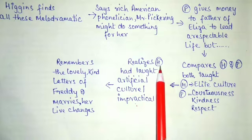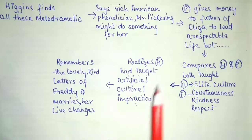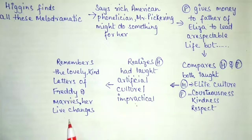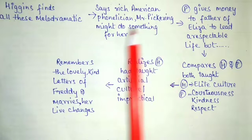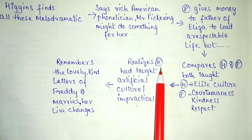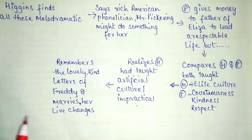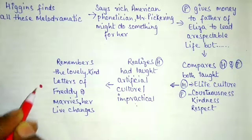With the money of Pickering she was able to lead a respectable life. So here we see it was not Higgins who changed the life of Eliza — it was Pickering. At last we realize it was Pickering who was the main positive influence alongside Eliza, and not Higgins. Higgins can be considered the antagonist of the story, and by this the story ends.